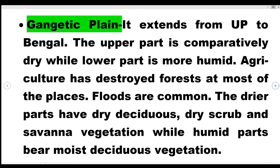The Gangetic Plains extend from Uttar Pradesh to Bengal. The upper part is comparatively dry, while the lower part is more humid. Agriculture has destroyed forests in most places. The drier parts have dry deciduous, dry scrub, and savanna vegetation, while the humid parts bear moist deciduous vegetation.